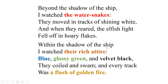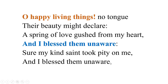'Within the shadow of the ship, I watched their rich attire: blue, glossy green, and velvet black; they coiled and swam, and every track was a flash of golden fire.' A very beautiful scene — the water snakes jumping in and out, their colorful skins shining. Then: 'O happy living things! no tongue their beauty might declare. A spring of love gushed from my heart, and I blessed them unaware.' This is the turning point — without his awareness, love gushes from his heart for small lives.